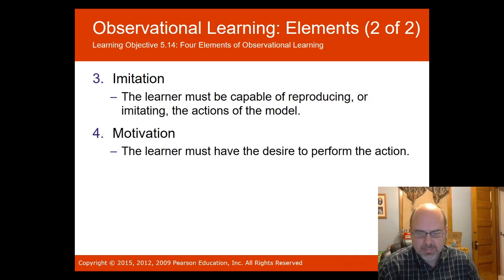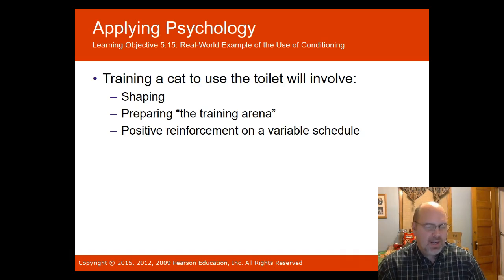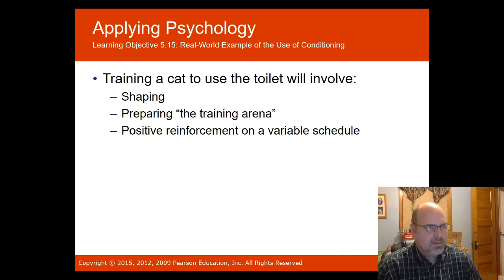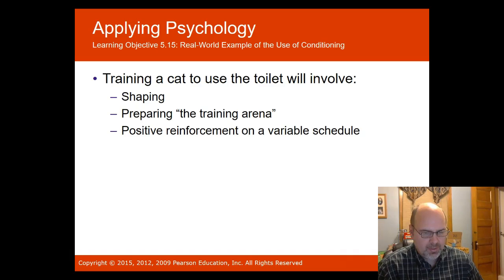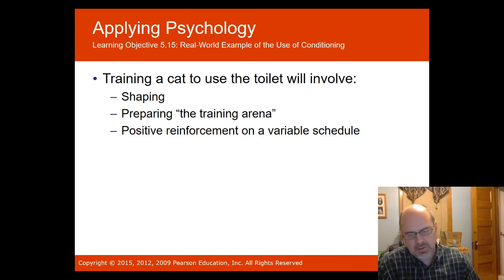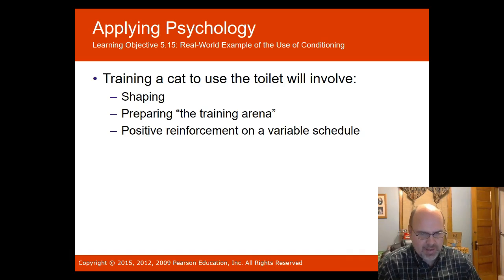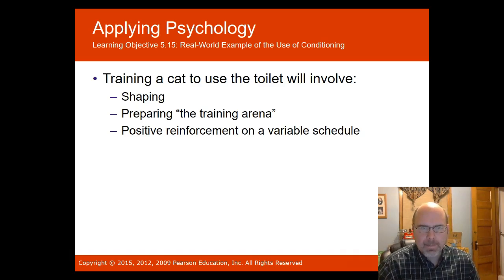The final section covers applying psychology through shaping — specifically training a cat to use the toilet instead of the litter box. You start by moving the litter box toward and then next to the toilet, propping it higher over time. Prepare the training area with the lid up, seat down, and door open. Use positive reinforcement on a variable schedule rather than a fixed ratio, as a fixed ratio leads to extinction. This concludes the session.